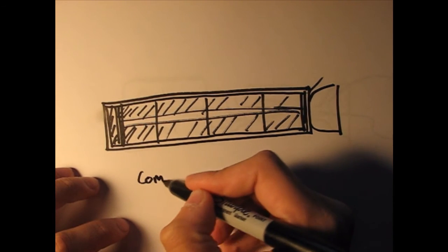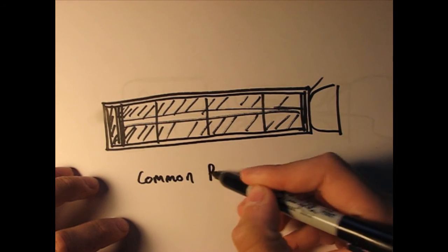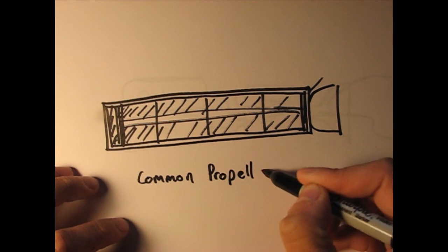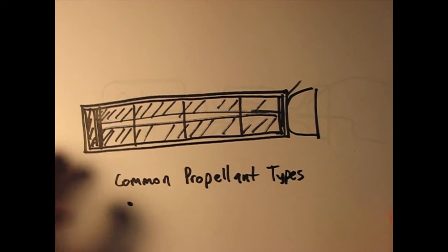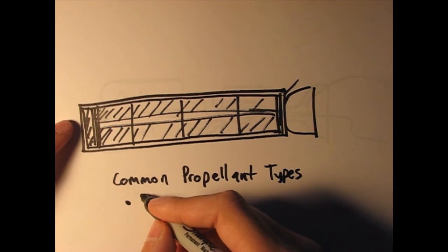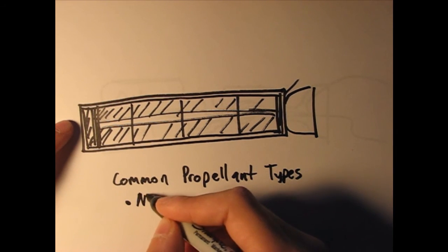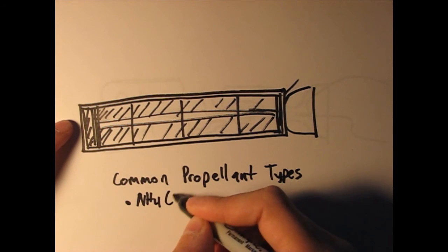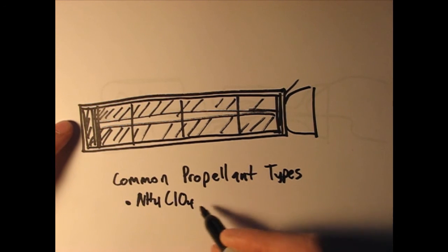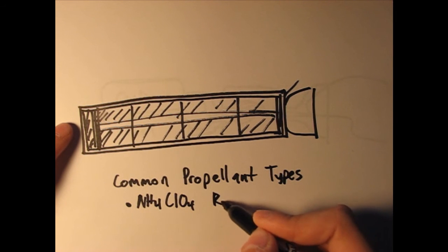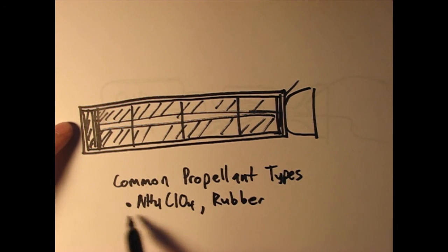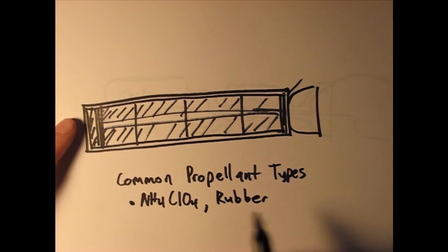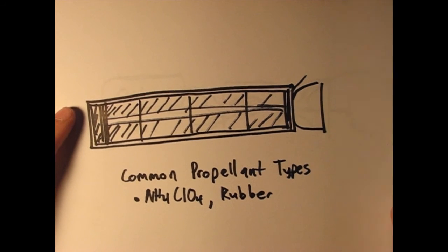Let's remember something else I wanted to mention. Common propellant types. One of the most common is actually ammonium perchlorate, which is NH4ClO4. That's the oxidizer and it's usually combined with rubber. This is called a composite propellant. These are used in like the space shuttle solid rocket boosters and in most of hobby rocketry.